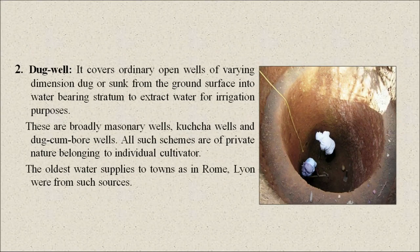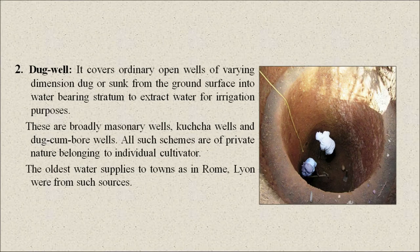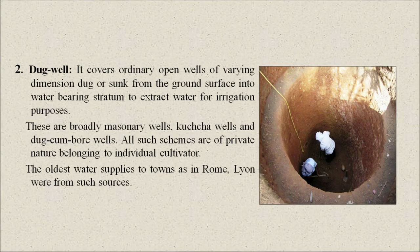The next method is the dug well, which covers ordinary open wells of varying dimensions dug or sunk from the ground surface into water-bearing strata to extract water for irrigation purposes. There are broadly masonry wells, kaccha wells, and dug-cum-bore wells. All such schemes are of private nature belonging to individual cultivators. The oldest water supply to towns, as in Rome and Lyon, came from such sources.